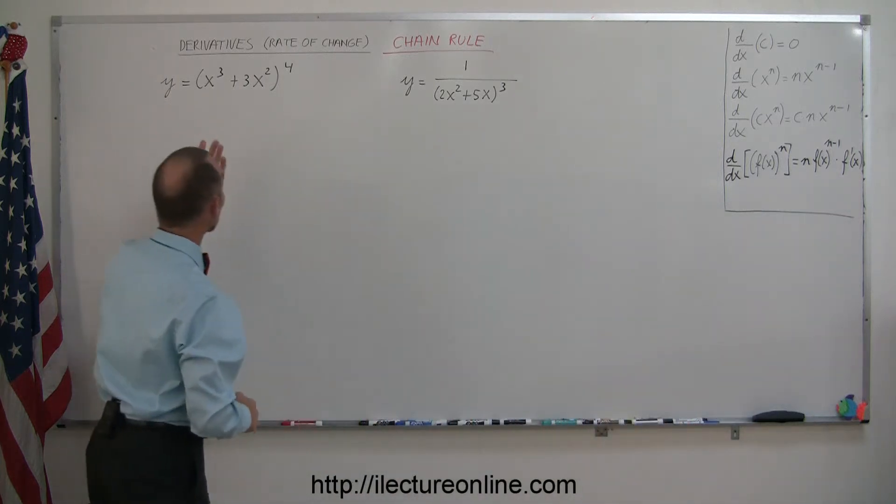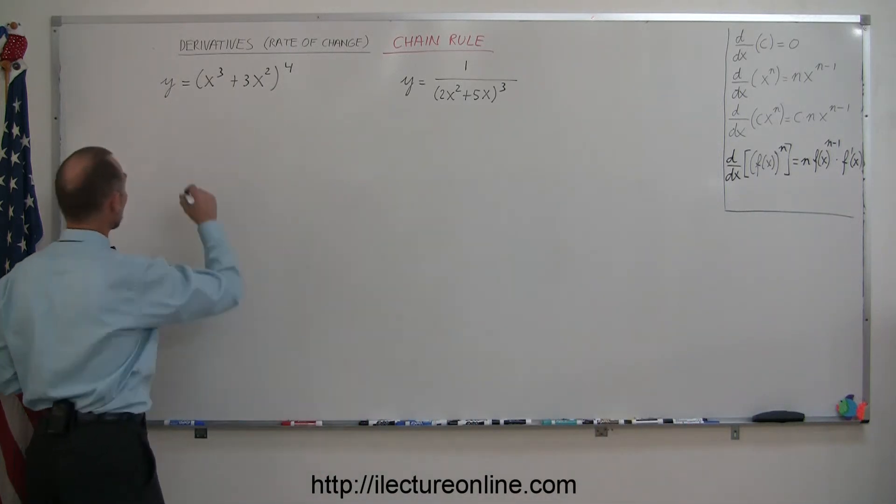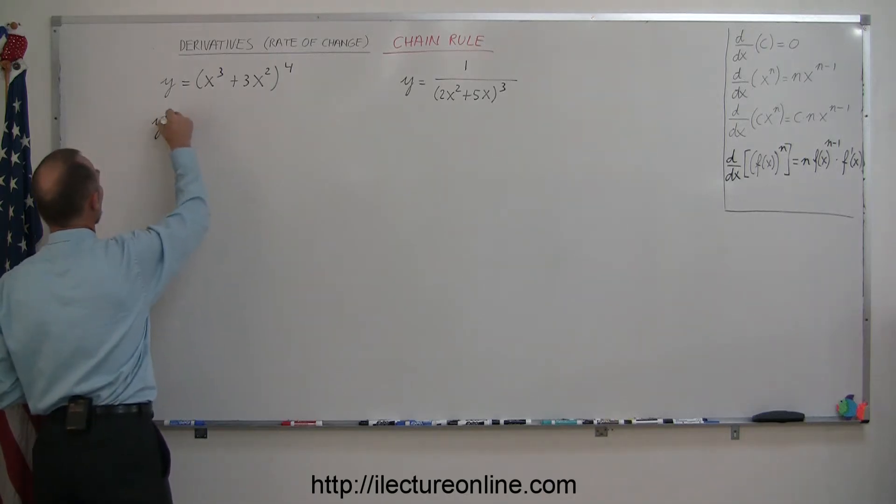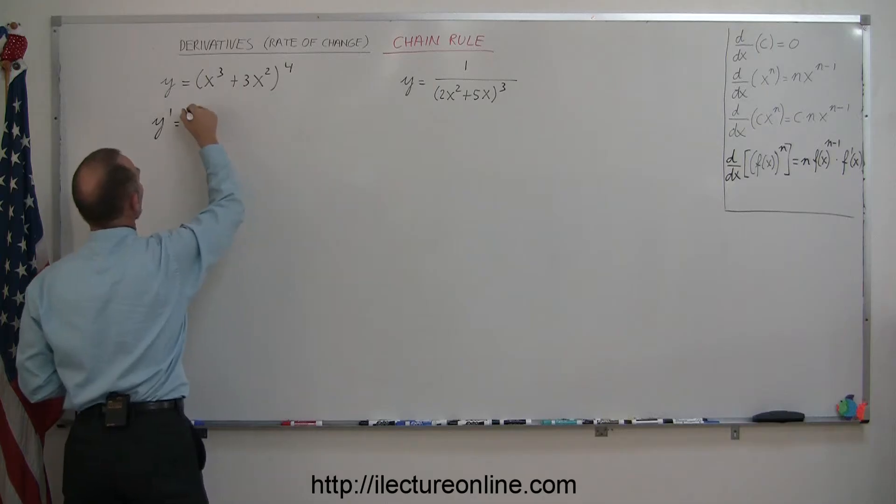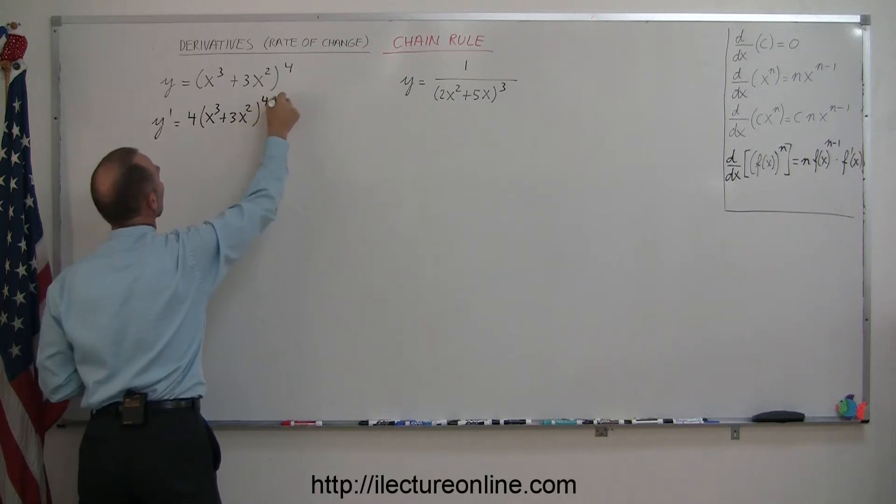So let's do that. Here's the example. So if we want to take the derivative of that, so y prime is equal to, we take the exponent, put it in front, 4 times x cubed plus 3x squared to the 4 minus 1.